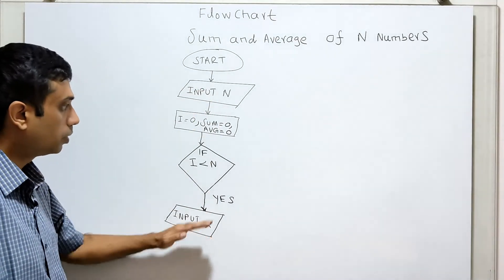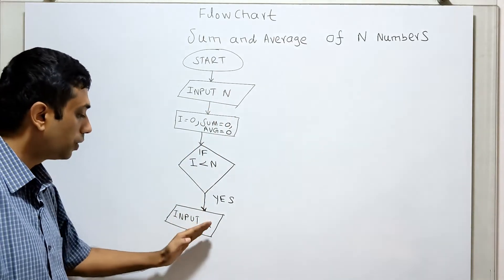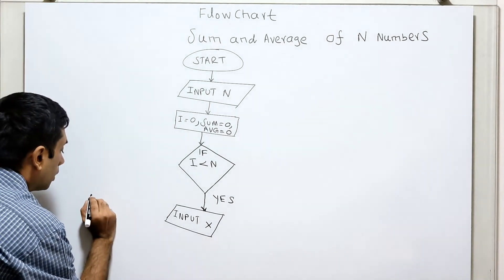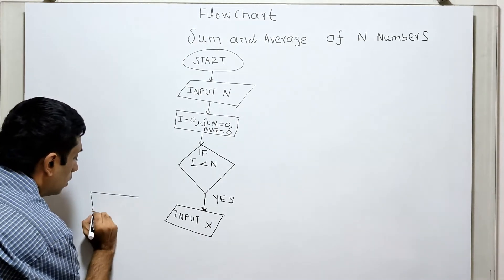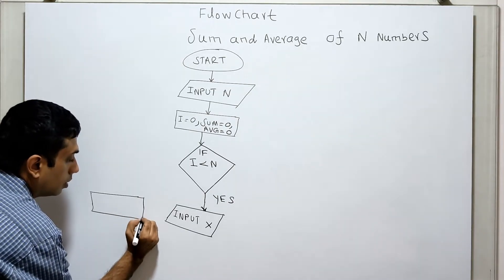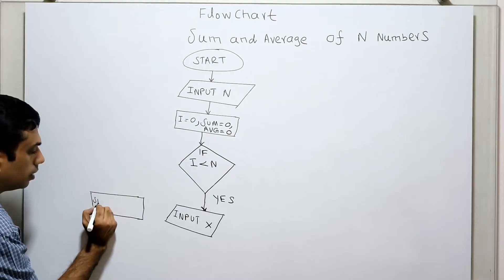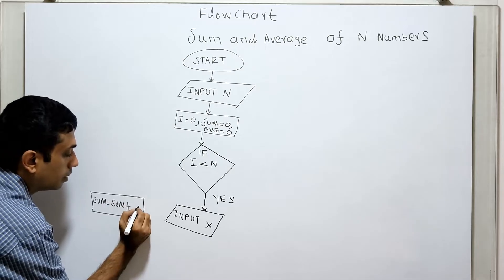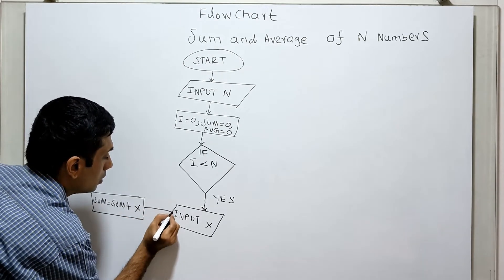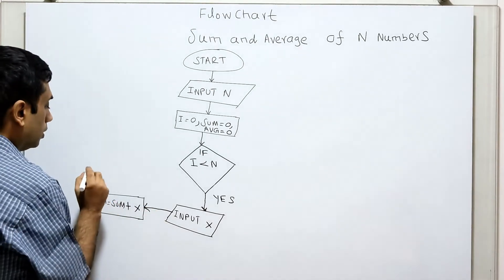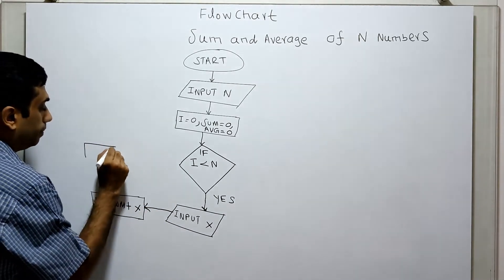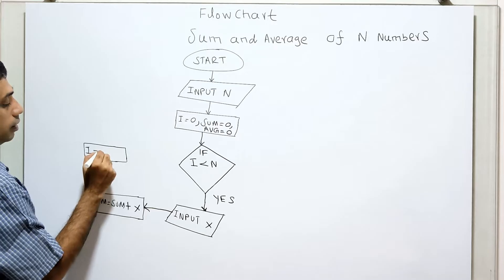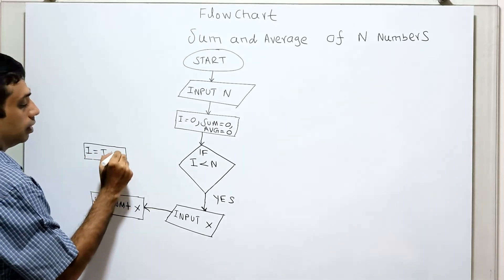n is the range and x is the input. If n equals 3, then 0 is less than 3, so it will obtain the first input x. Next, I am adding: sum equal to sum plus x. Next, I am incrementing i equal to i plus 1.